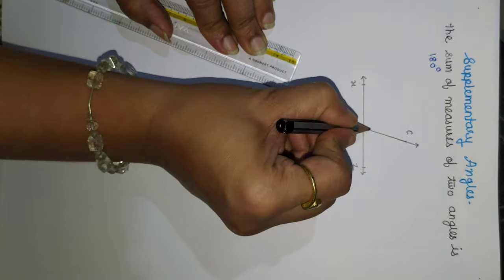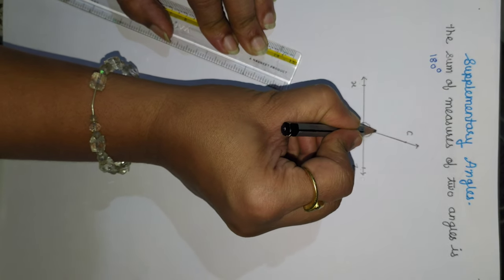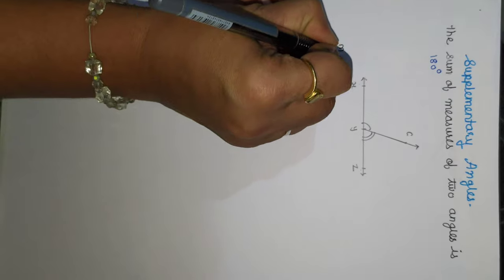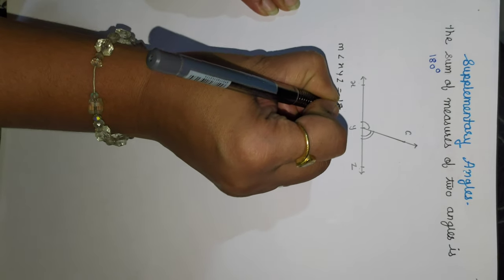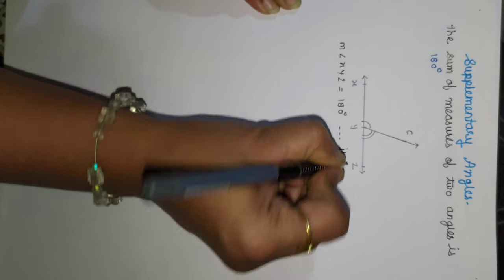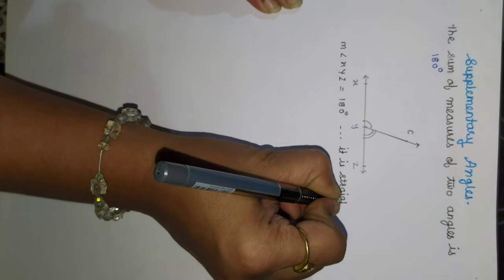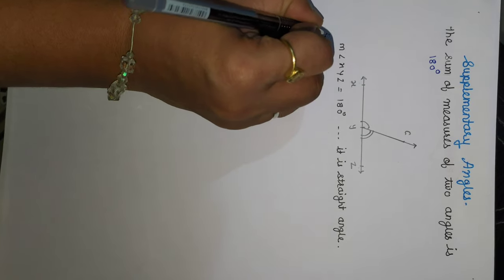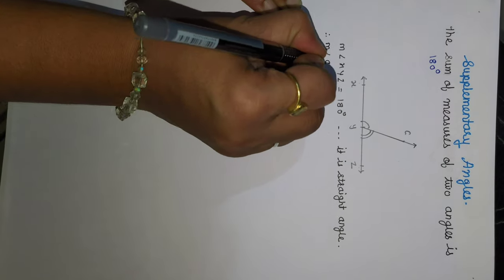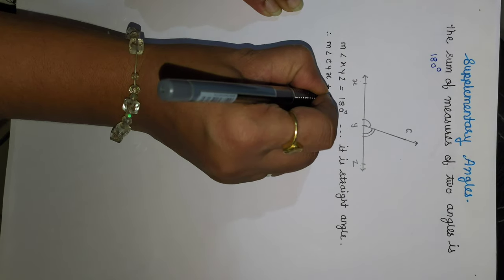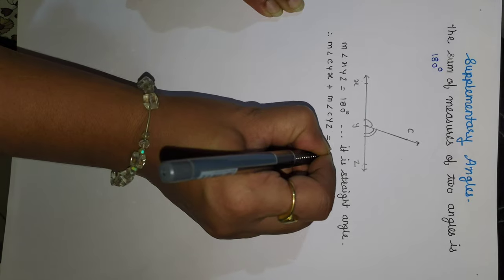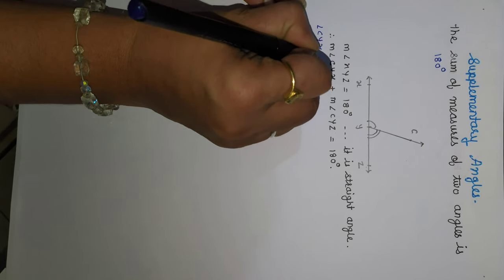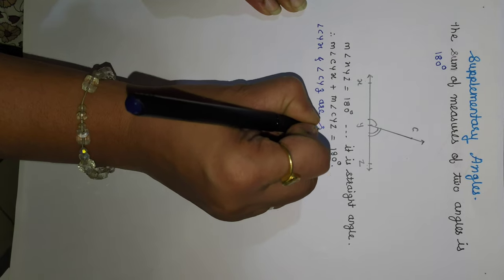That is, angle CYX and angle CYZ. As we know that angle XYZ is the straight angle, the measure of angle XYZ is 180 degrees. If we add the measure of these two angles — that is, measure of angle CYX plus measure of angle CYZ — it will be equal to 180 degrees. Then we will say that angle CYX and angle CYZ are supplementary angles.